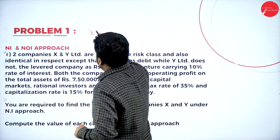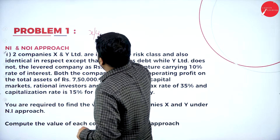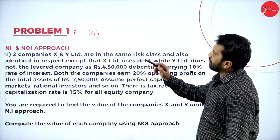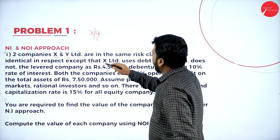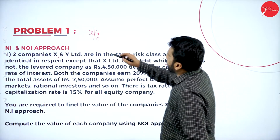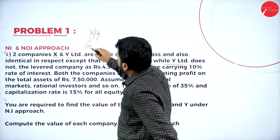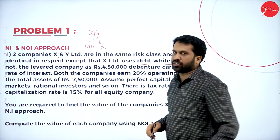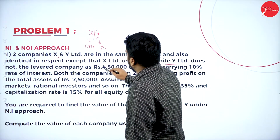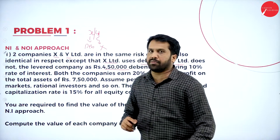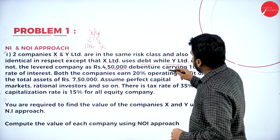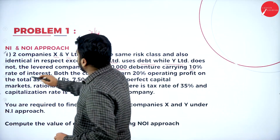Two companies, X and Y, are in the same risk class and identical in all respects except that X Limited uses debt while Y Limited does not. X Limited has debentures and Y Limited doesn't. The levered company X has 4,50,000 worth of debentures carrying 10 percent rate of interest.